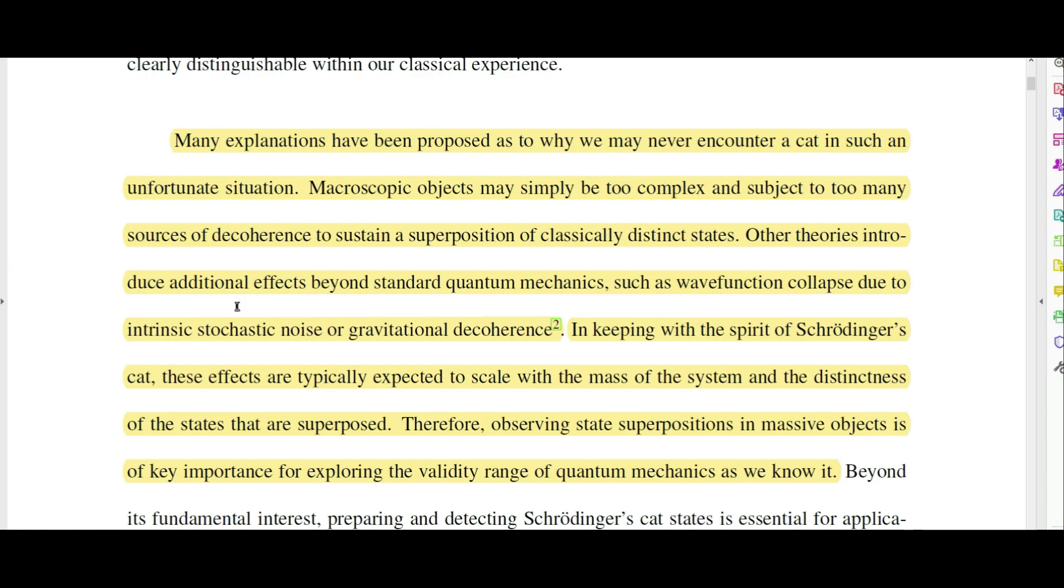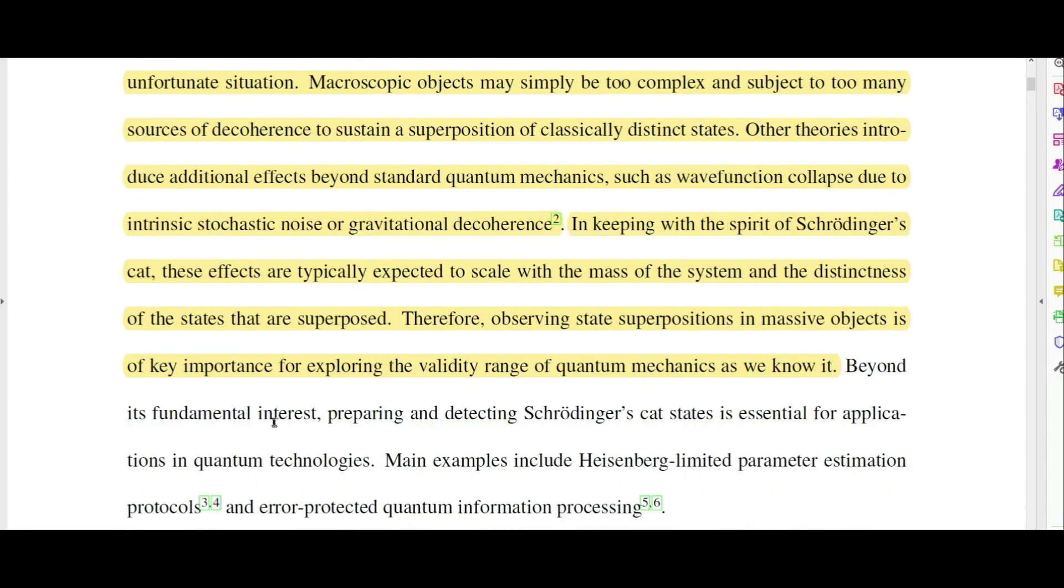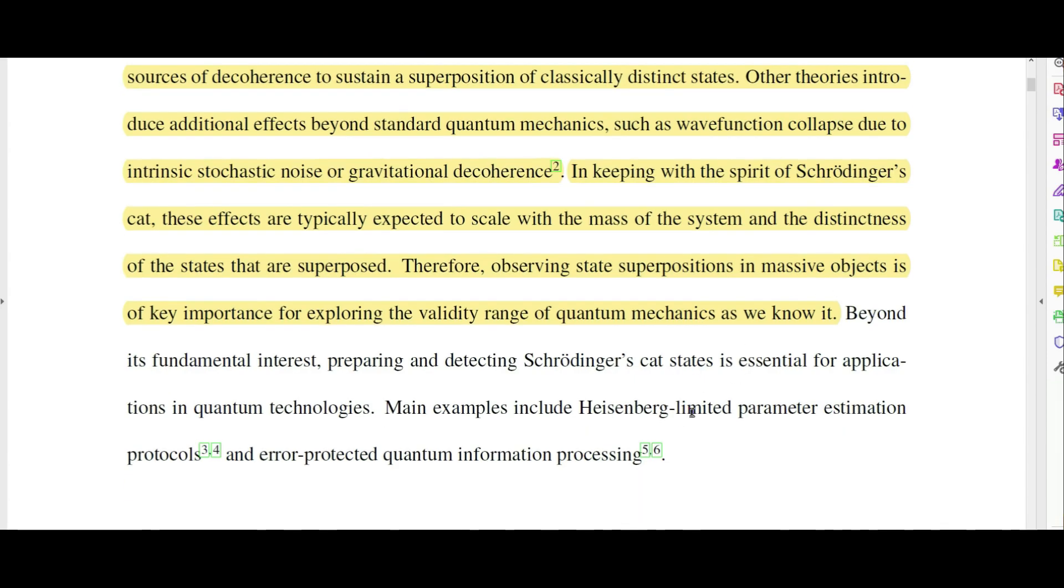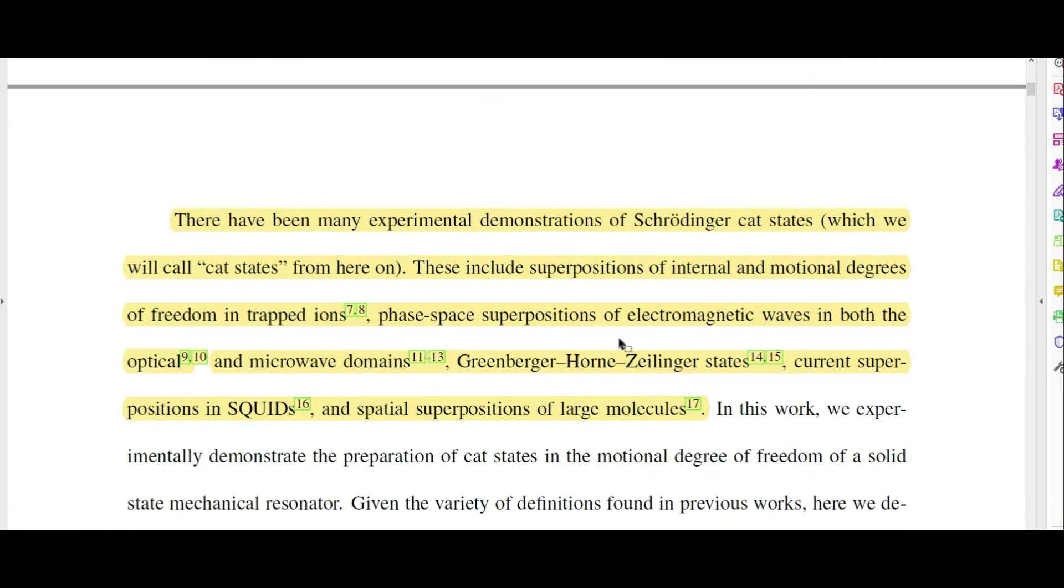Other theories introduce additional effects beyond standard quantum mechanics, such as wave function collapse due to intrinsic stochastic noise or gravitational decoherence. In keeping with the spirit of Schrödinger's cat, these effects are typically expected to scale with the mass of the system and the distinctness of the states that are superposed. Therefore, observing state superpositions in massive objects is of key importance for exploring the validity range of quantum mechanics as we know it.